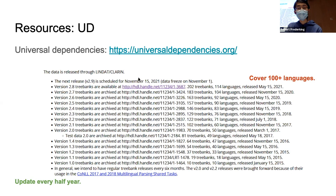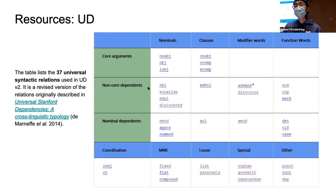The Universal Dependencies project is updated every half year; version 2.9 is coming soon. It covers over 100 languages with over 200 treebanks — it's a very large project. UD includes not only dependency parsing but also universal POS tags and universal morphology features. Version 2 has 37 universal syntactic relations. It is a revised version of Stanford Dependencies, originally developed primarily for English but aimed at multilingual extension.